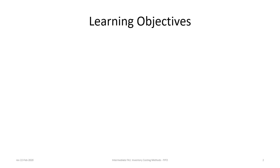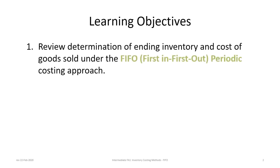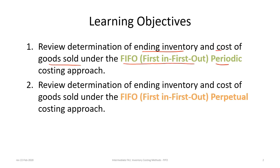There are two learning objectives for this tutorial. The first is to determine the cost of ending inventory and cost of goods sold under the FIFO, or first in first out, periodic costing approach. The second is to determine the cost of ending inventory and cost of goods sold under the first in first out perpetual costing approach.